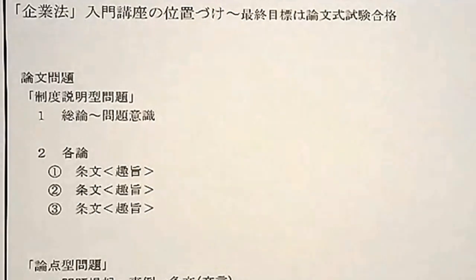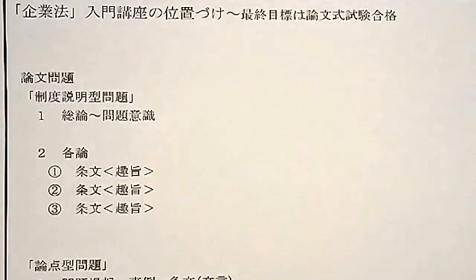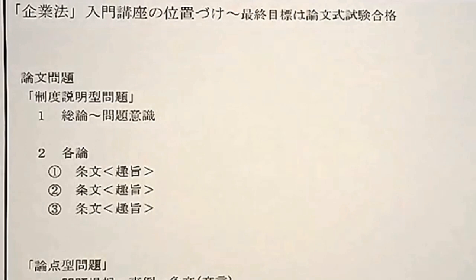上級講座でも第一分冊から始めるので、入門を聞いた方は2度聞くことになりますが、1度で理解できる科目ではないので問題ありません。企業法は短答式試験と論文式試験で大きく異なります。短答式は条文の存否を覚えて判定する試験で、論文式は条文を参照しながら解釈を書く試験です。